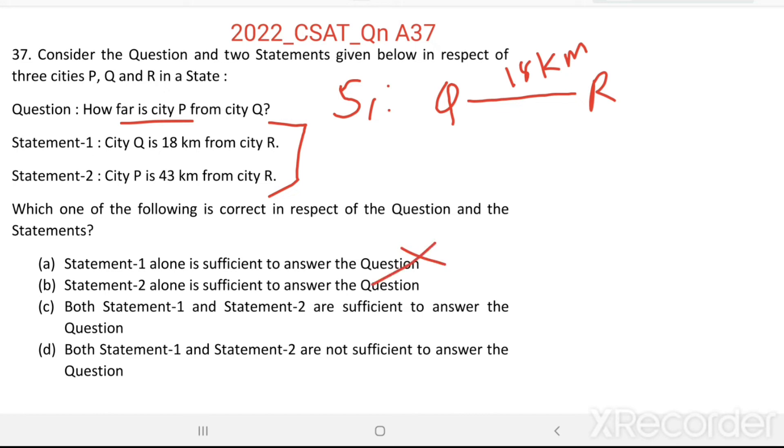Now see the second statement. City P is 43 km from city R. City P is 43 km from city R.